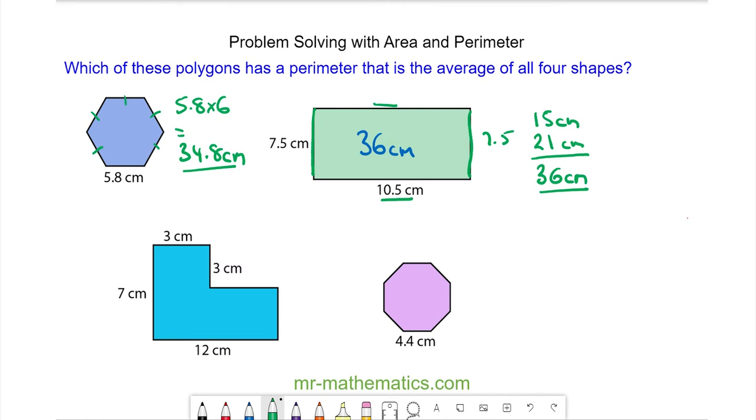With this compound shape, we know this length is 7, and this length is 3, which means this length must be 4. And this is 3, and this is 12, and 3 and 9 will make the 12.